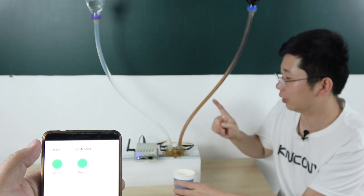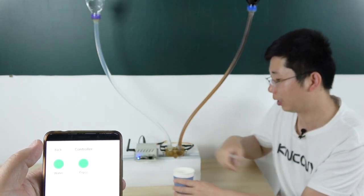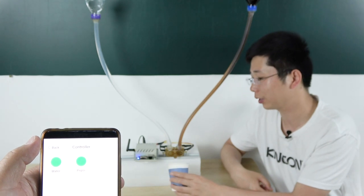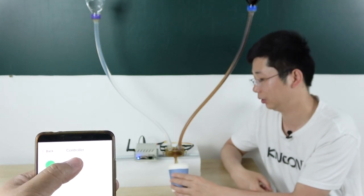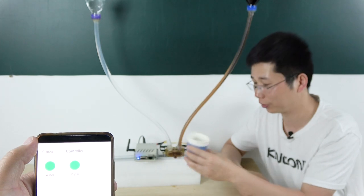Now if I want to drink from this pipe, I can just press the key on the mobile phone. Okay, you can see I can drink.